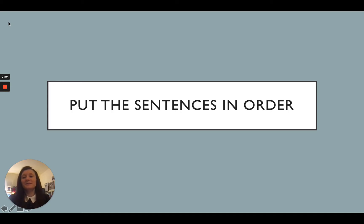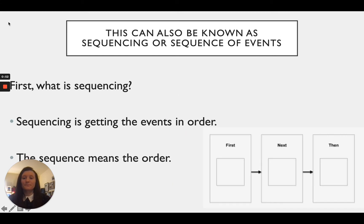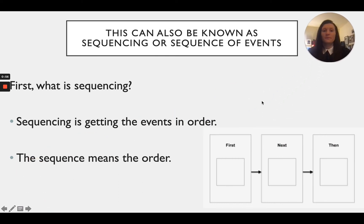All right, good morning second grade students! Today for language arts we are going to be talking about putting sentences in order. To put sentences in order, we need to look for what are called time order words. Time order words can include first, second, third — those are called number positional words — as well as next, then, after that, last, and finally. We'll want to keep a lookout for these types of time order words to help us put sentences into the correct sequential order.